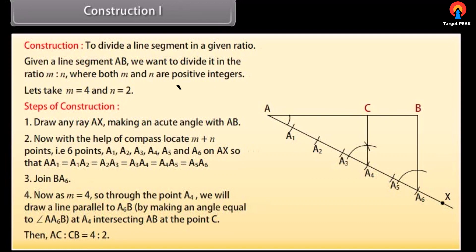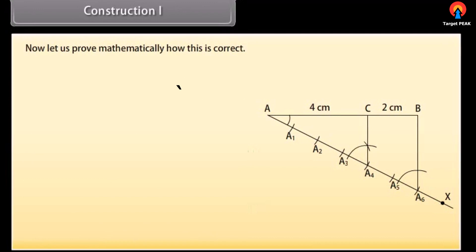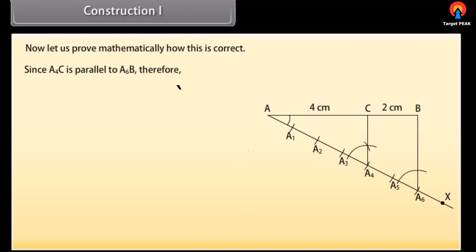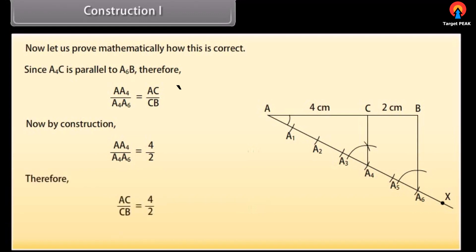Then AC to CB equals 4 is to 2. Now let us prove mathematically how this is correct. Since A4C is parallel to A6B, therefore by the basic proportionality theorem, AA4 upon A4A6 equals AC upon CB. By construction, AA4 upon A4A6 equals 4 upon 2. Therefore AC upon CB equals 4 upon 2. This shows that C divides AB in the ratio 4 is to 2.